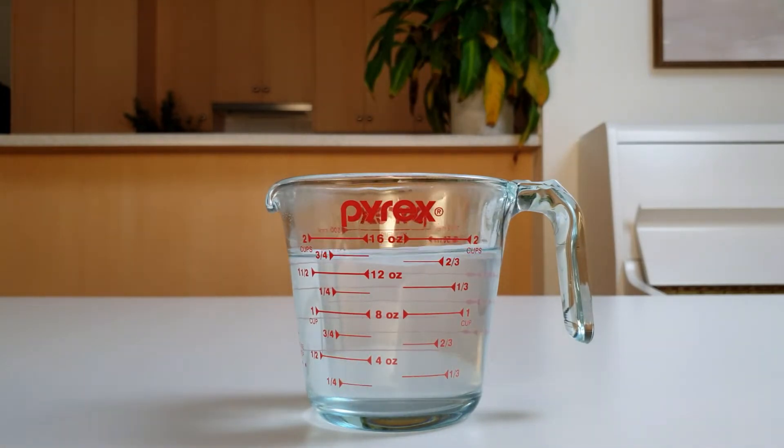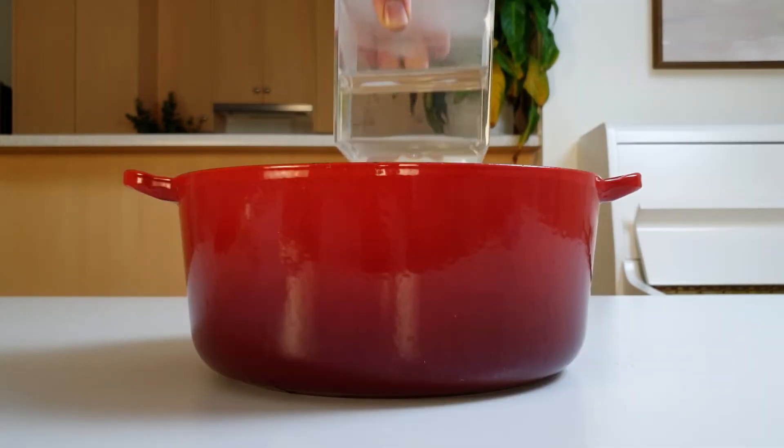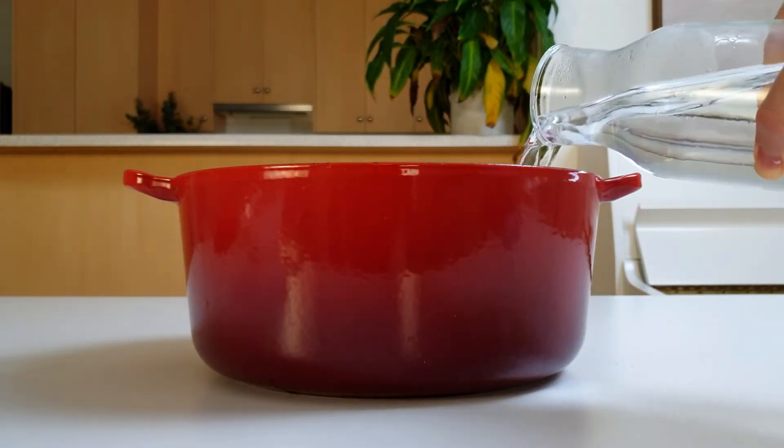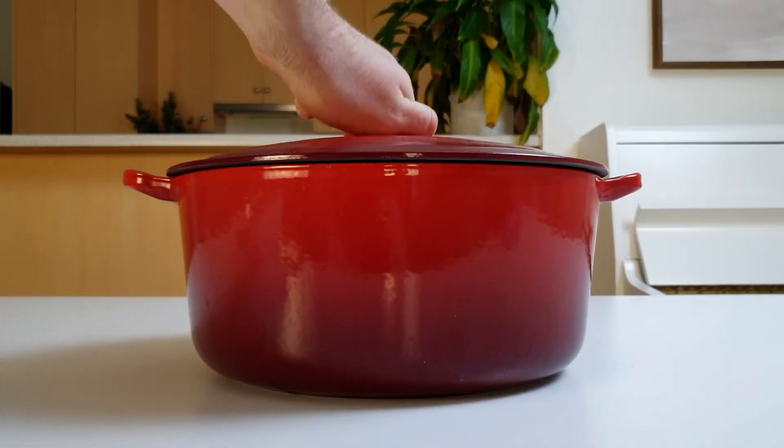Once all of the Epsom salt has dissolved, pour the solution into a container, and place this container in a large pot. Add warm water to the pot, until it's at the level of the water in the container, and leave this to cool overnight.